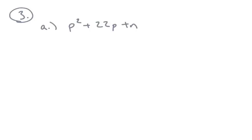Okay, let's look at number three. Determine the value of n that makes the polynomial a perfect square, then write the polynomial as a square of a binomial. Okay, so we're looking at 3a. Essentially this question is just asking you to complete the square.